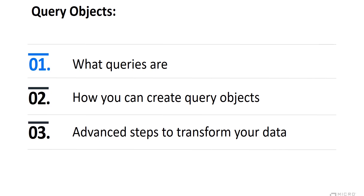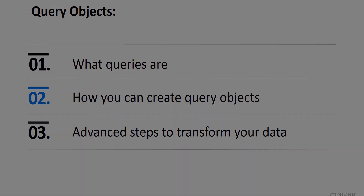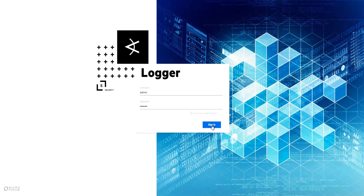Queries in Logger Reports are entities that communicate with data sources to extract your desired data. Query objects, comprised of queries bundled with additional metadata, are used as the basis for designing reports. Logger Reporting provides a set of pre-built queries which are used as the basis for the system-defined reports and solution reports to address common security use cases.